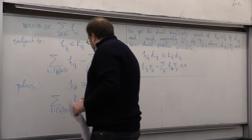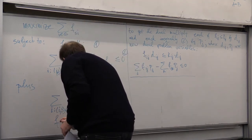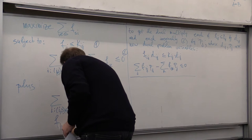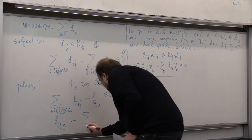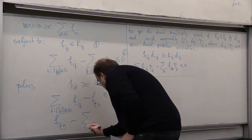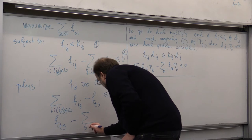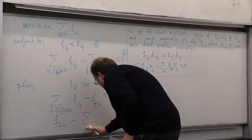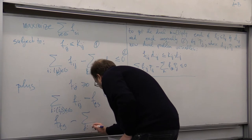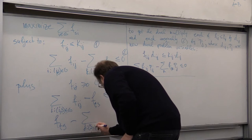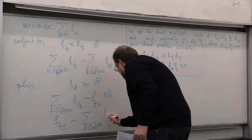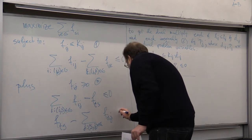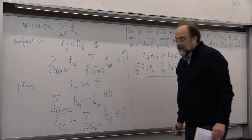And also for the source, so then you have one incoming flow F,T,S minus, and then you have all outgoing flows from S to, so it will be for all J such that S,J belongs to G of F,S,J is also smaller or equal than zero, right?